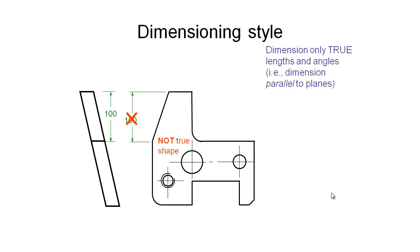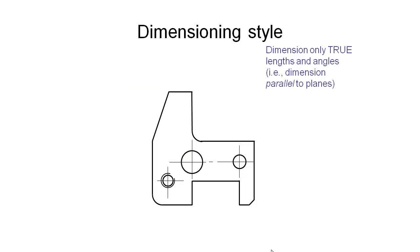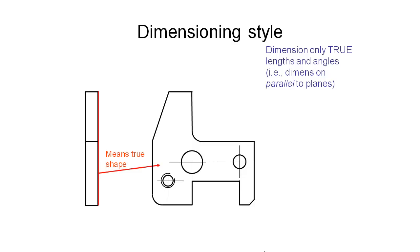If we had to, we could dimension it in this view to clearly show that the distance between this edge and this edge is 100 projected, but the distance along that edge is not necessarily 100. Let's assume instead that the object is actually flat and represented correctly in our orthogonal projection with nice square angles. This view now shows the true shape of this face, and we can go about dimensioning it.